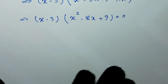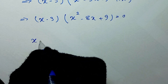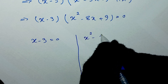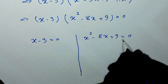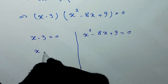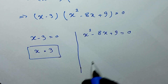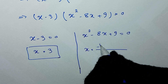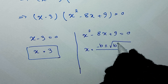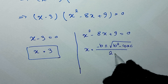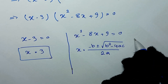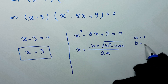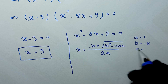We now have two solutions for x. From x minus 3 equals 0, we get x equals 3. From the quadratic factor x squared minus 8x plus 9 equals 0, we apply the quadratic formula: x equals negative b plus or minus square root of b squared minus 4ac, all over 2a. Here a equals 1, b equals negative 8, and c equals 9.